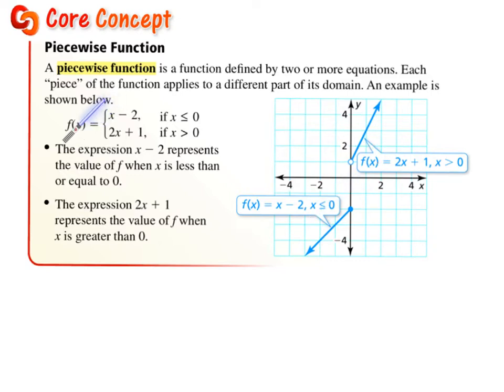So the domain is different for each one of these lines. So if you notice, f of x equals, and then we have two functions: x minus 2 and 2x plus 1. Now, any time that the domain is less than or equal to 0, we're going to use the first function. Any time x is greater than 0, we're going to use the second function.